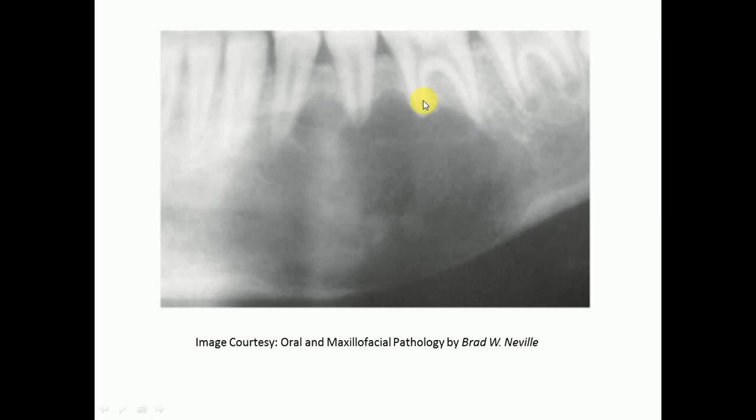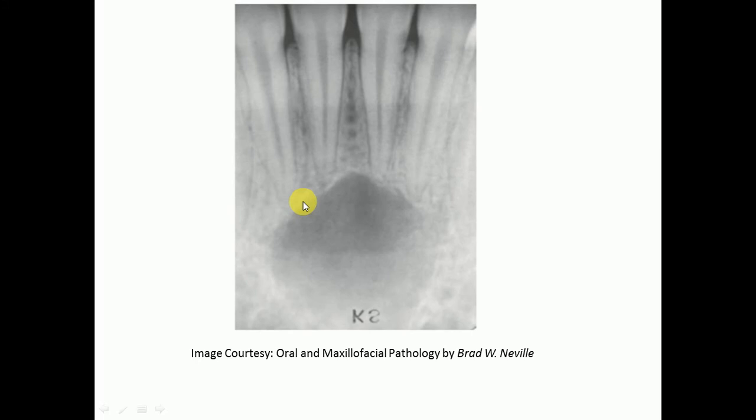Here we can see the body of the mandible with a radiolucent lesion which is unilocular, and there is scalloping present between the roots. This is a traumatic bone cyst case. The radiolucency may be unilocular or multilocular. Here we can see a unilocular lesion at the apices of the tooth roots. One important point is that the teeth involved in the lesion are vital.